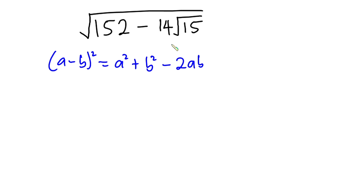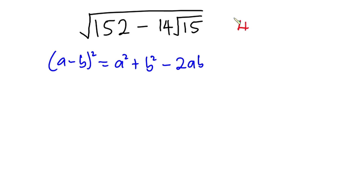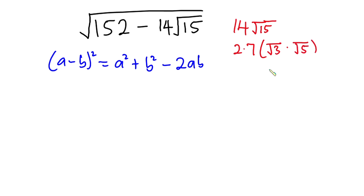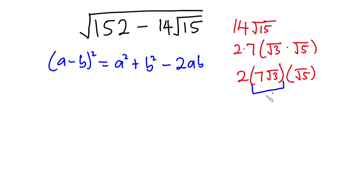Watch this. I'm going to express this whole thing in the form 2ab. So we have 14 square root of 15. I'll write 14 as 2 times 7, then I'll write square root of 15 as square root of 3 times square root of 5. I'll keep the 2, then multiply 7 by square root of 3 to get 7 square root of 3, times square root of 5. So I'll call 7 square root of 3 as 'a' and square root of 5 as 'b' — and we can see we have 2ab just like the identity.